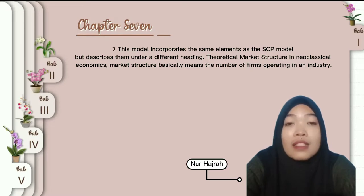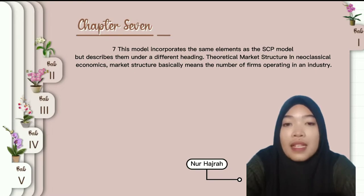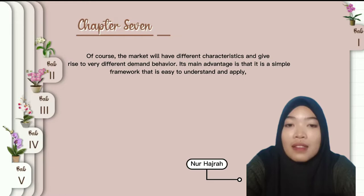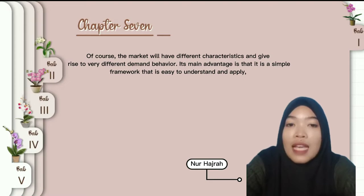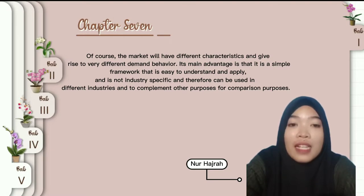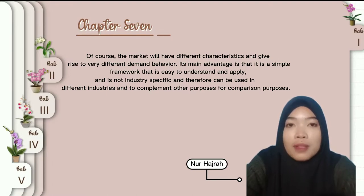The theoretical market structure in neoclassical economics basically means the number of firms operating in an industry. Of course, the market will have different characteristics and give rise to very different dominant behavior. Its main advantage is that it is a simple framework that is easy to understand and apply, is not industry specific, and therefore can be used in different industries and for comparison purposes.